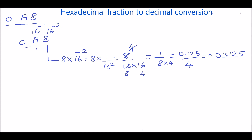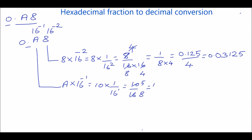Then take the next digit A. A multiplied by its weight, which is 16 power minus 1. A in hexadecimal is equal to 10. So 10 into 1 by 16, that is 10 by 16. Dividing gives 5 by 8, which is 5 into 0.125, which equals 0.625.